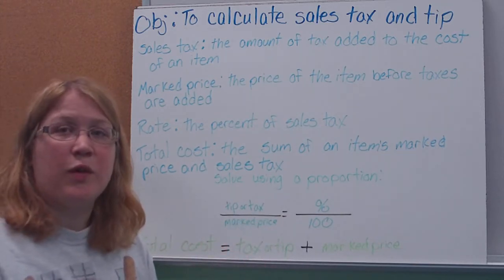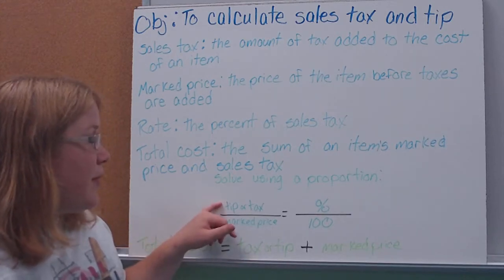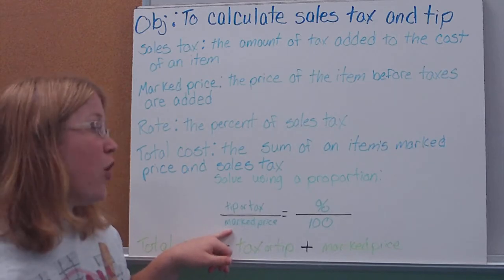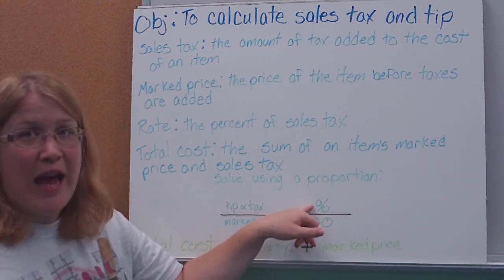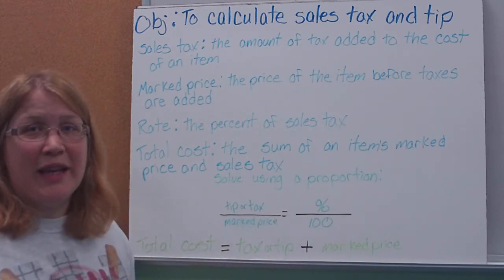So again, we're solving this using a proportion, same way we've been setting it up all along. The tip or the tax goes above your marked price or your original cost, and that'll give you your percent or your rate of tax over 100. Same way we've been setting it up.